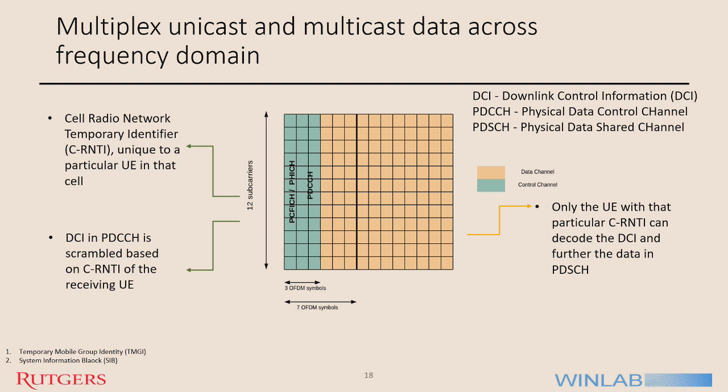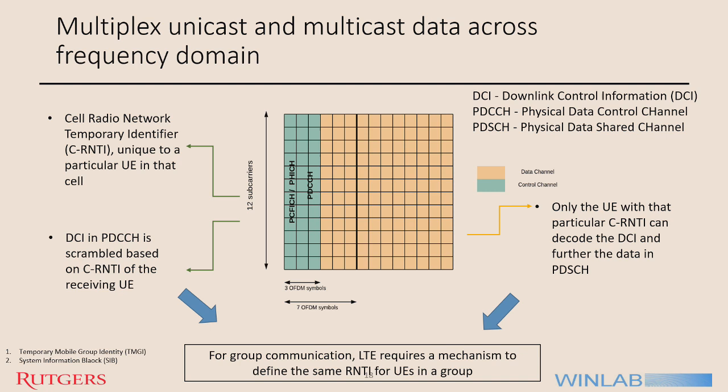We can derive inspiration from this unicast scenario for group communication as well. For group communication, many UEs have to decode the PDCCH simultaneously. We can tell them the same RNTI, and with that same RNTI they can decode the PDCCH and after decoding PDCCH they can decode the data. So for group communication, LTE requires a mechanism to define the same RNTI for UEs in a group.